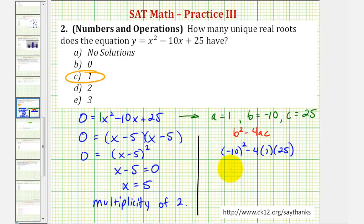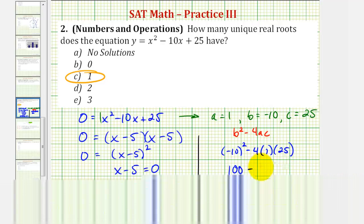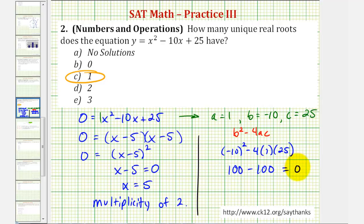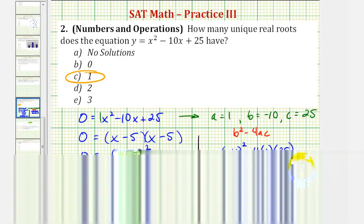Well, negative 10 squared is 100, minus four times one times 25 is also 100. 100 minus 100 is zero, verifying that we do only have one real solution, or in this case, one real root.